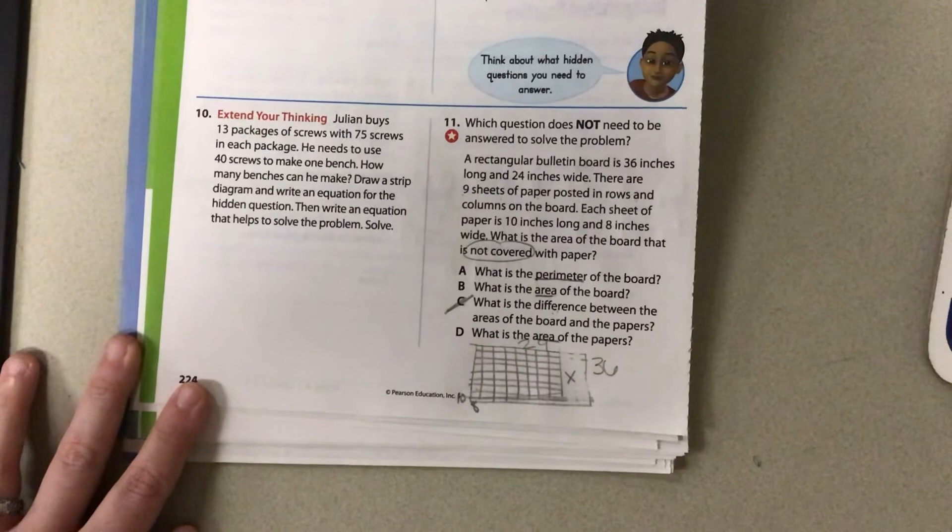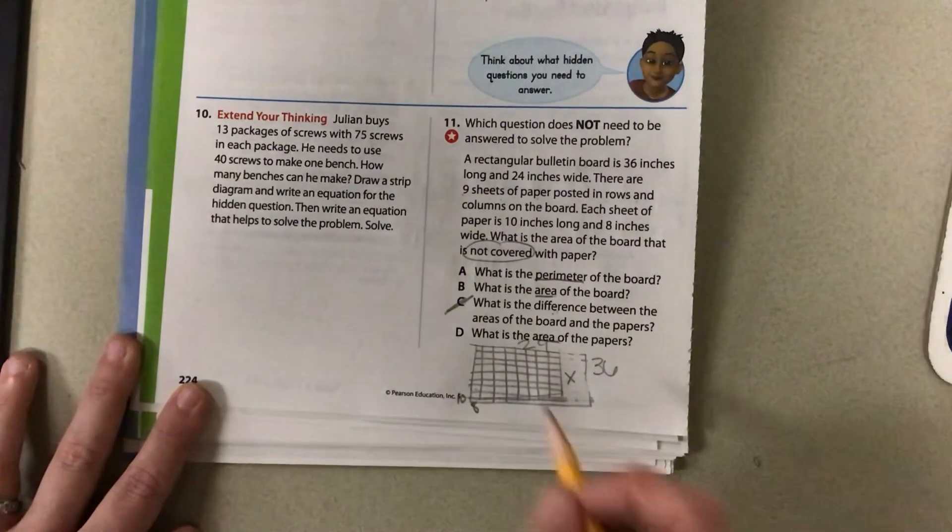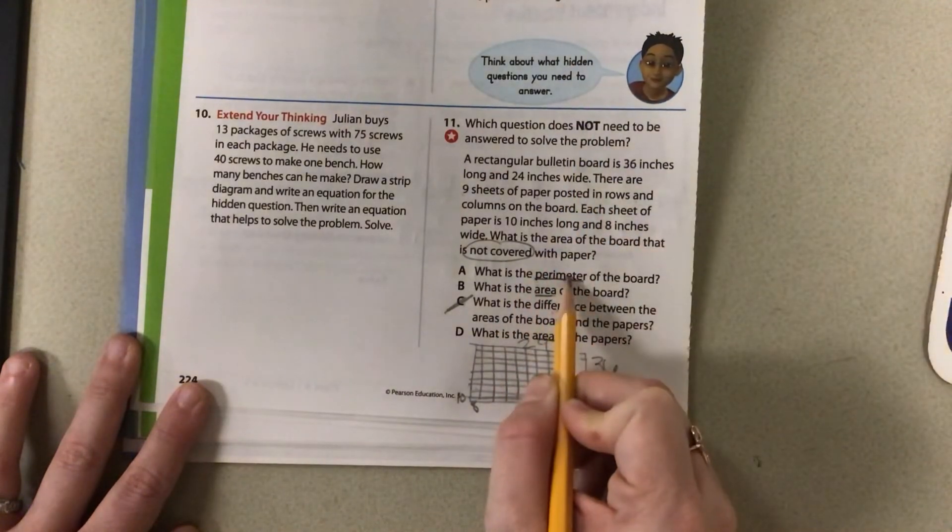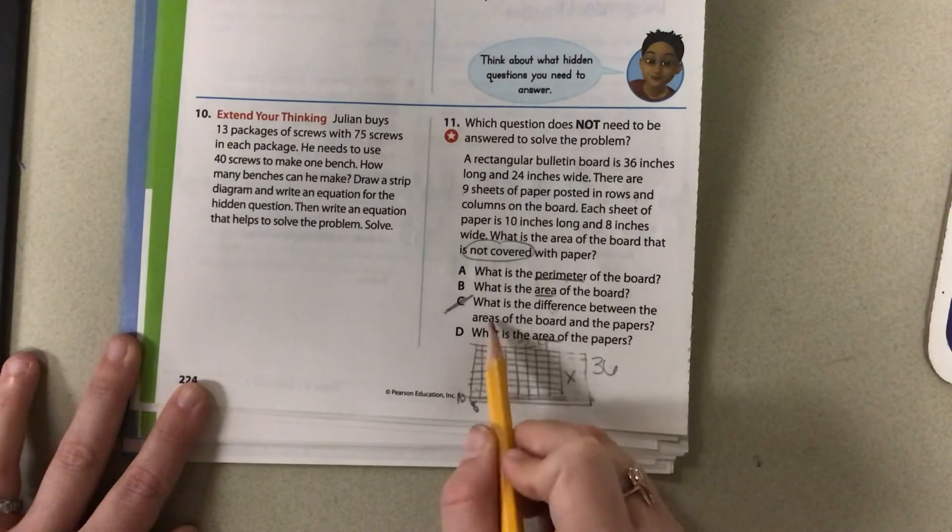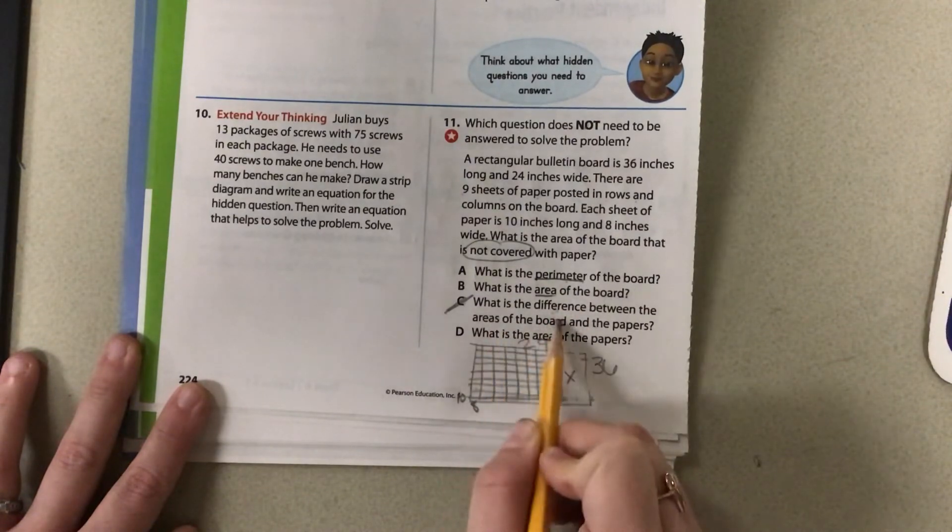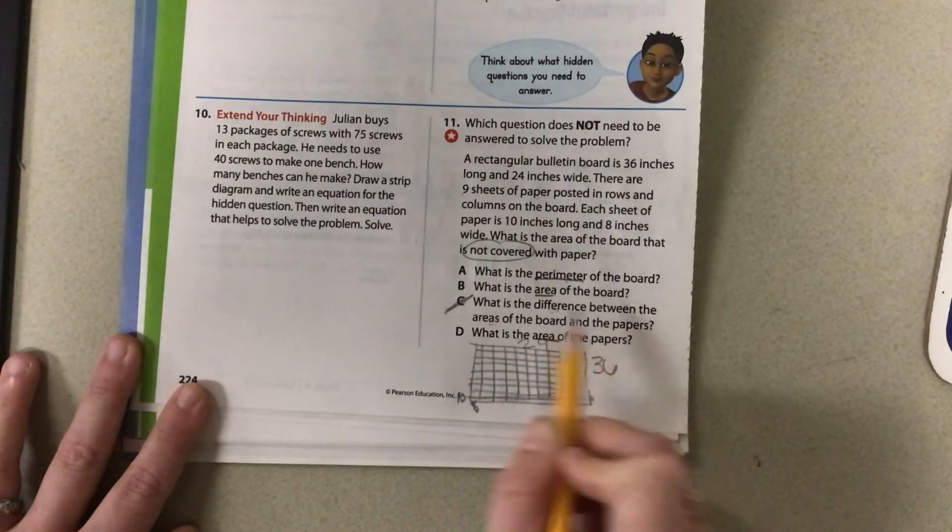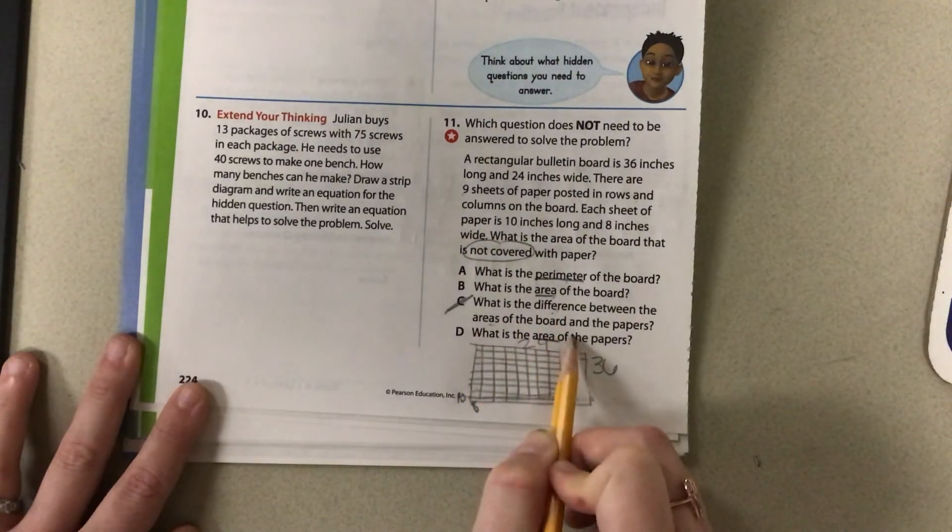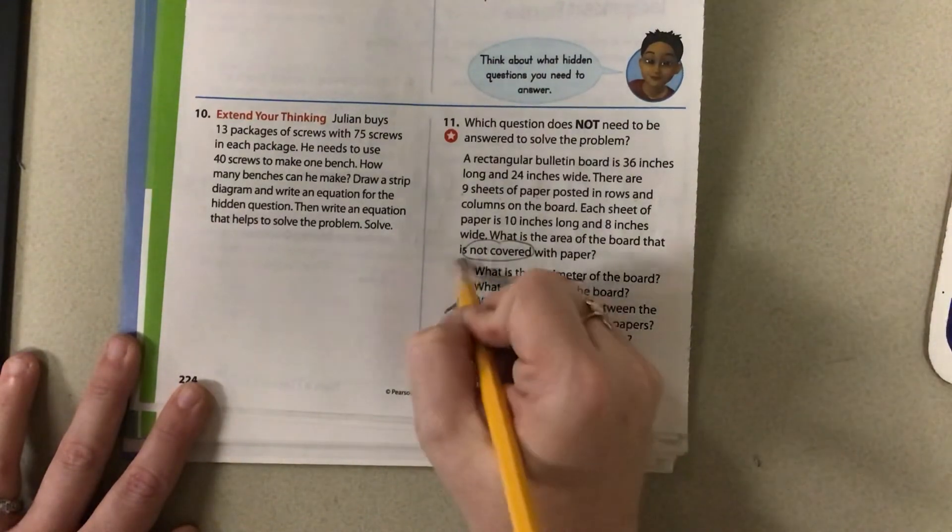What do two of them have in common? The word area. So if two of them have in common area and I'm looking for not, it's most likely going to be the perimeter. And since I know for sure I want to find the difference between the area of the board and the area of the papers, then I know I need to know the area of the board and I know I need the areas of the paper, which means I don't necessarily need to know the perimeter.